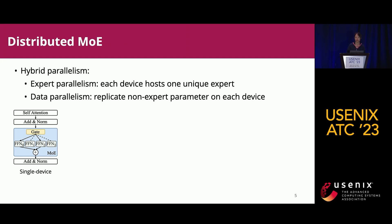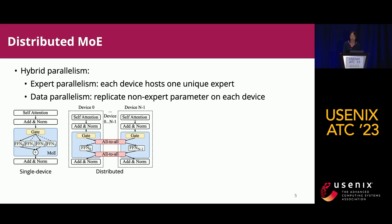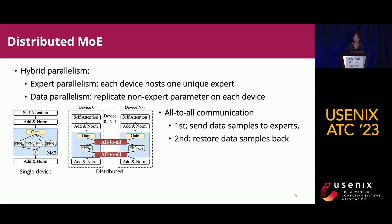Transformer models tend to be very large and it is inevitable to use distributed systems for efficient training and inference. When we adopt distributed systems for MOE, there is another parallelism called expert parallelism. Each device hosts one unique expert and we replicate the non-expert models on each device via conventional data parallelism, creating a hybrid parallelism. However, this increases additional communication costs because a data sample on one device could be routed to an expert on another device. The communication primitive here is called all-to-all: the first all-to-all sends tokens to the correct experts, and the second restores the data back.